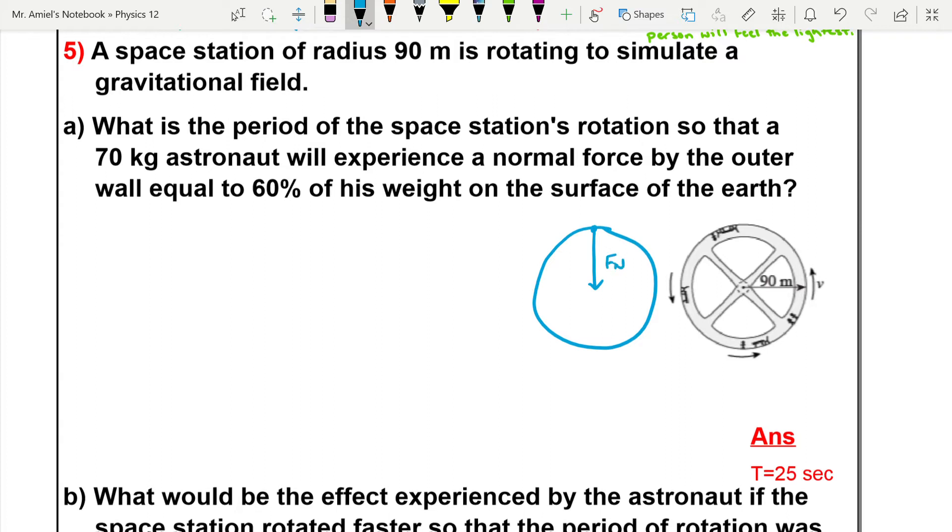So we can go ahead and record our variables. We know that the mass of our astronaut is going to be 70 kilograms, and we know that the radius of the space station is 90 meters.